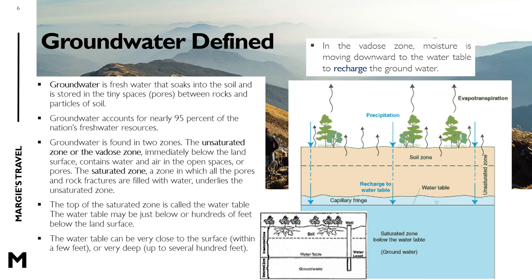The unsaturated zone contains water and air in the open spaces or pores. The saturated zone is a zone in which all the pores and fractures are filled with water, and it underlies the unsaturated zone. In the saturated zone, voids are completely filled with water, while in the unsaturated zone, some voids are not filled with water but also contain air. The top of the saturated zone is called the water table, which may be just below or hundreds of feet below the land surface.